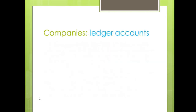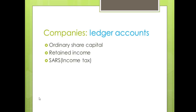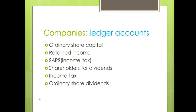Now we are going to look at the major accounts we will be dealing with in this topic. The first one is ordinary share capital, the second one is retained income, the third one is SARS income tax. We are also going to look at shareholders for dividends, ordinary share dividend, and the major account — the appropriation account.